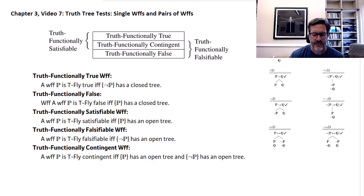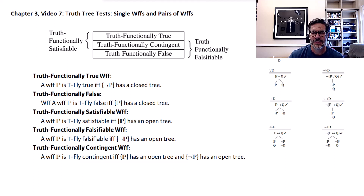Welcome back. In this video, chapter 3, video 7, we're going to cover the truth tree tests for single formulas and pairs of formulas. This actually turns out to be much more complicated than it is for sets, arguments, and entailments, because depending on what results you get, you may have to do two trees. I'm not going to cover every possibility here, but I'm going to go through some useful examples.